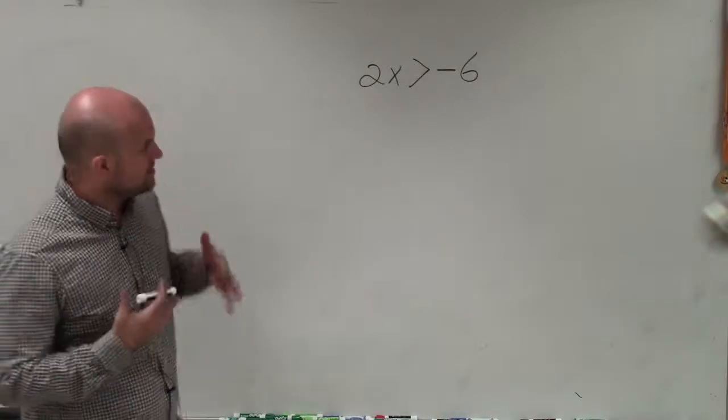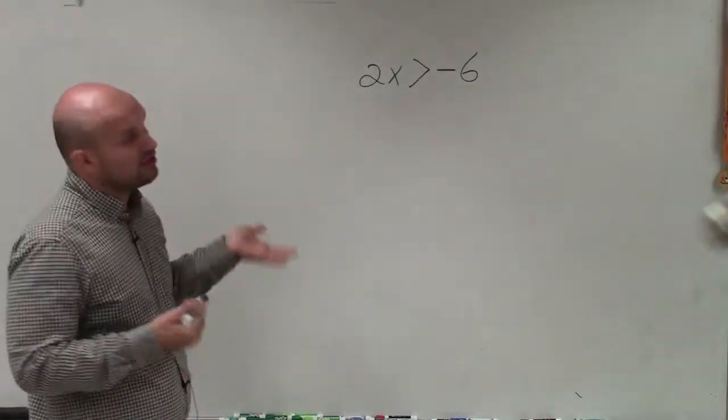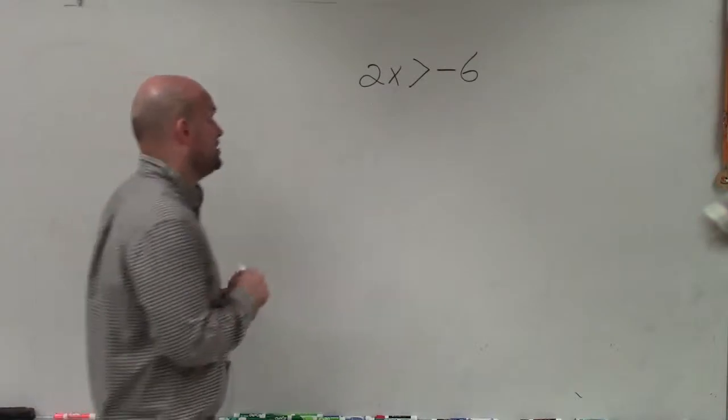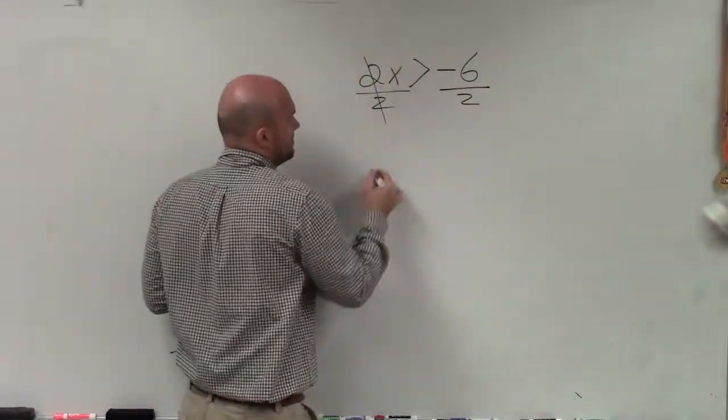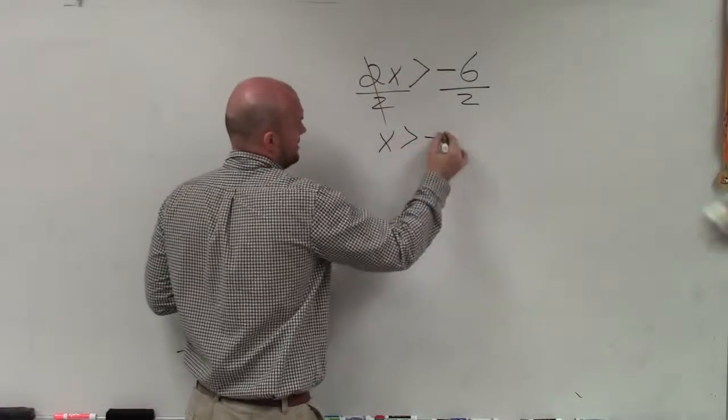To do this, we're going to want to solve for our variable. And you can see our only variable that we have in this case is x. So to solve for x, I'm going to divide by 2 on both sides. By dividing by 2, I have x is greater than negative 3.